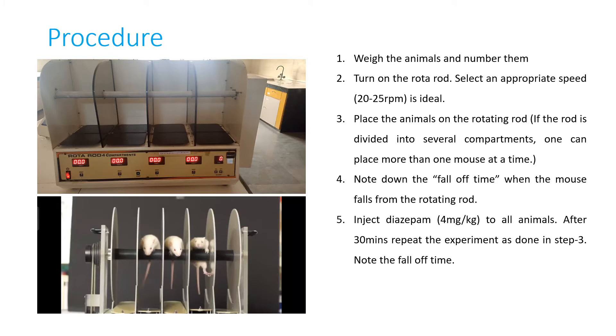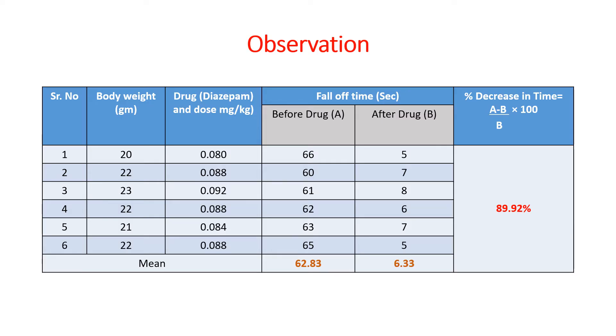We will inject the animal with the drug and after 30 minutes, again we will place the animal on the rotating rod and note down the fall off time. Compare the fall off time of animal before and after diazepam. This is the observation.